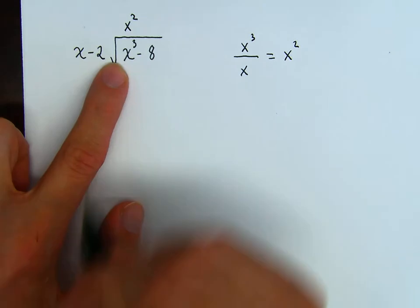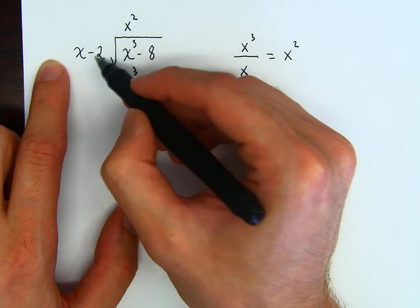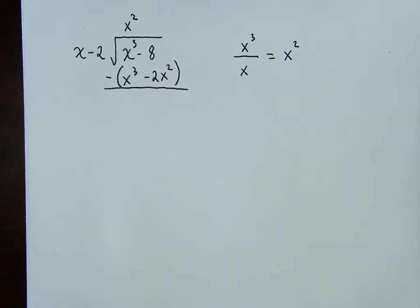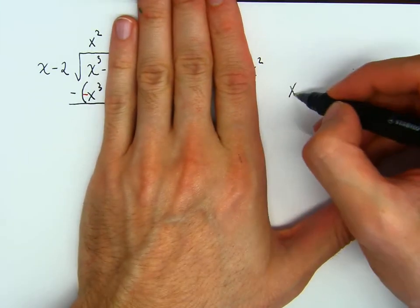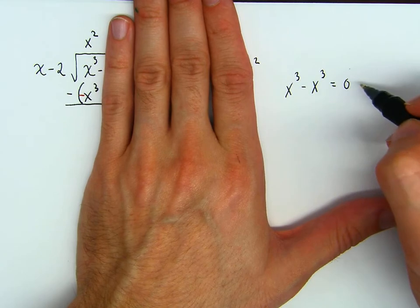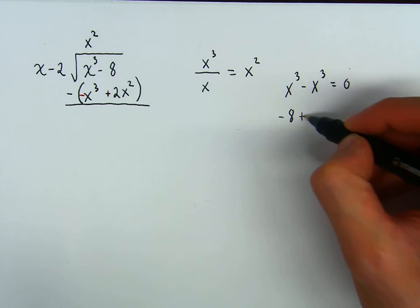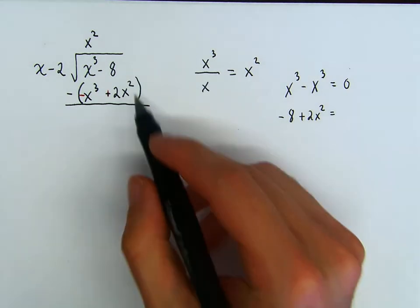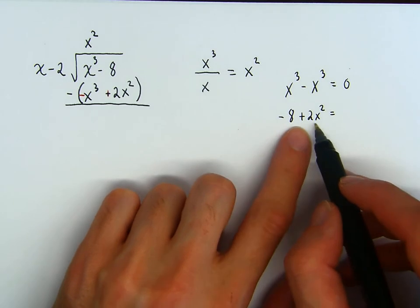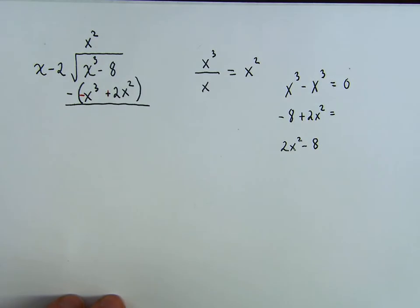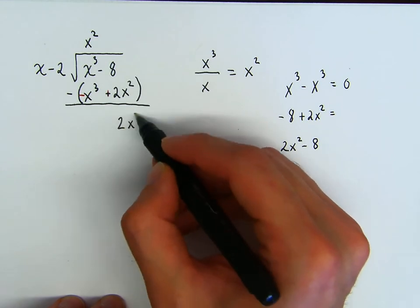x squared times x gives x cubed. x squared times minus 2 is minus 2x squared. Parentheses, parentheses, subtract. Distribute the negative — this becomes positive. x cubed minus x cubed is zero — the exponents are the same so I can subtract these two terms. But then can I do negative 8 plus 2x squared? Can I combine these two terms? You can't. So you're just going to leave it. And instead of leaving it as negative 8 plus 2x squared, we want it in standard form — so we show it as 2x squared minus 8. You cannot combine these two terms, so we just drop it down like this.